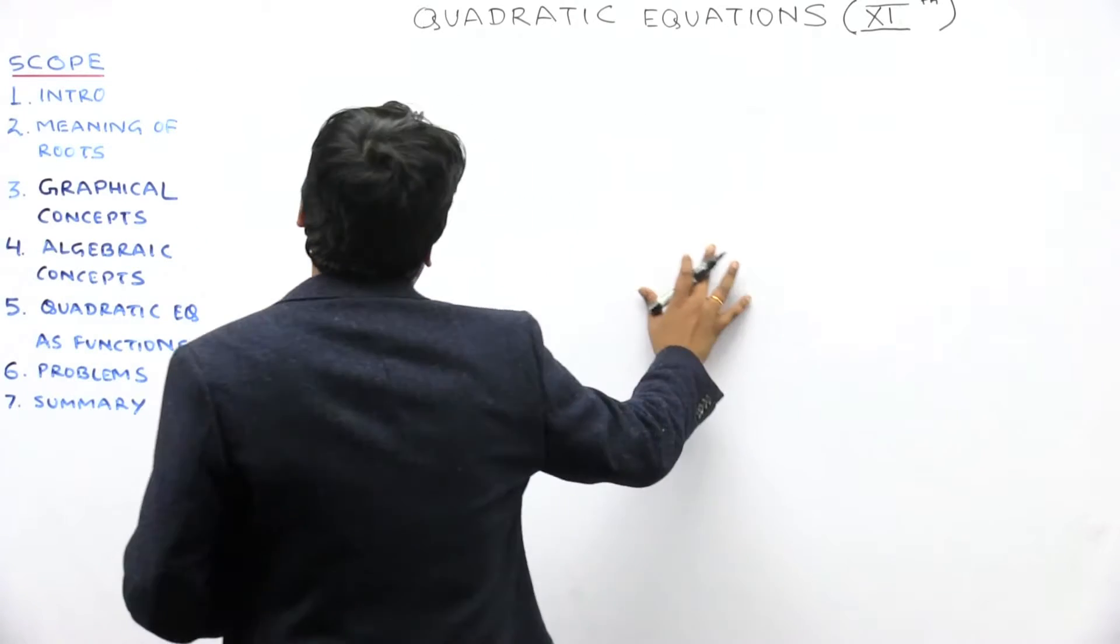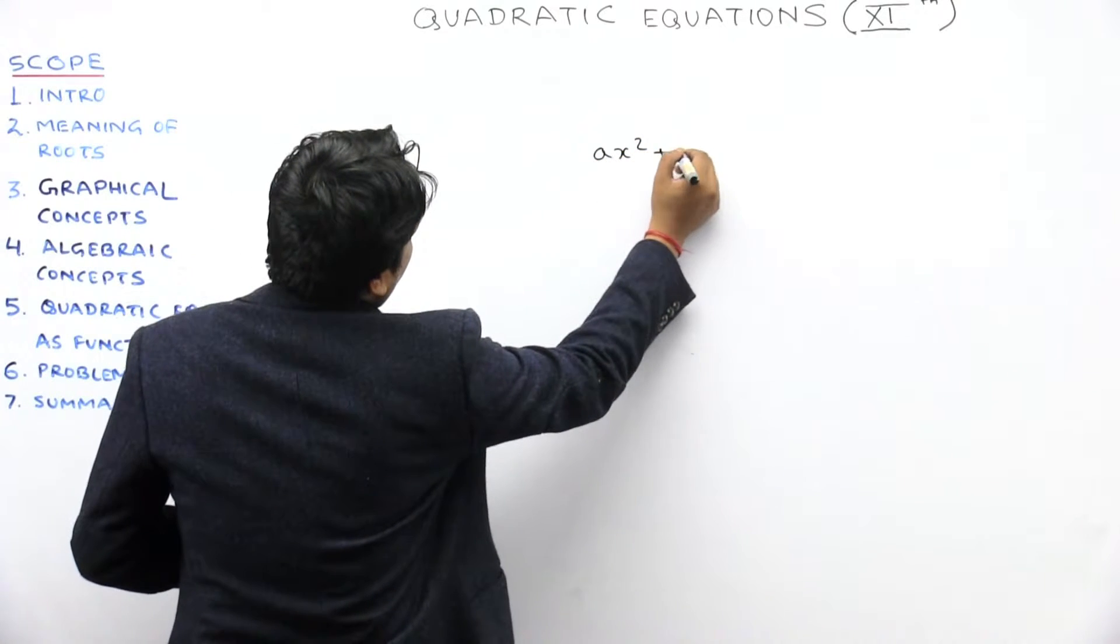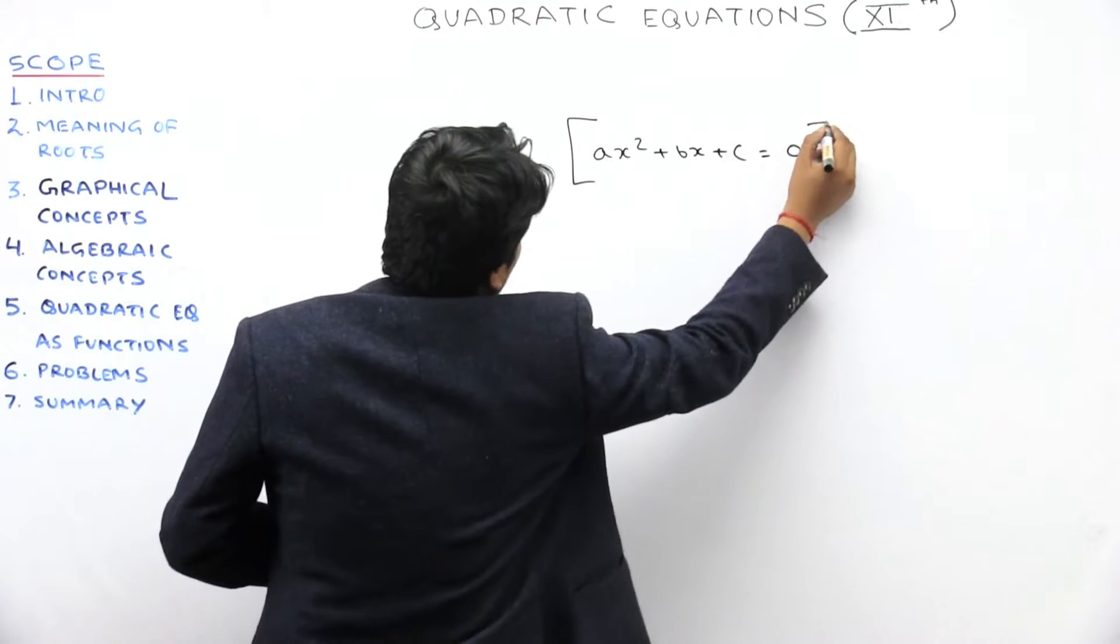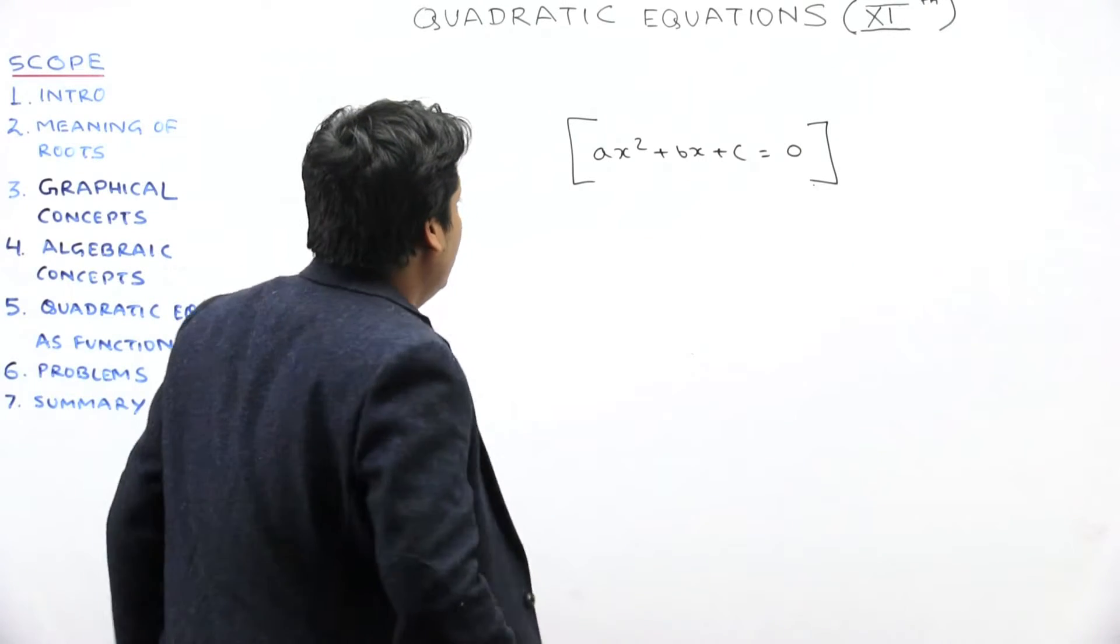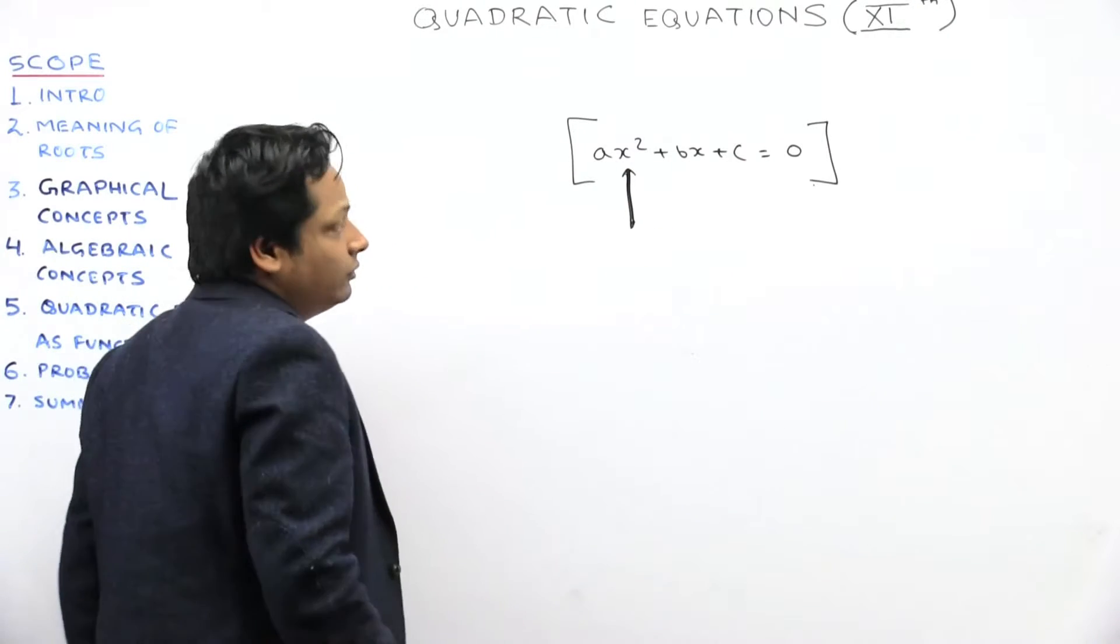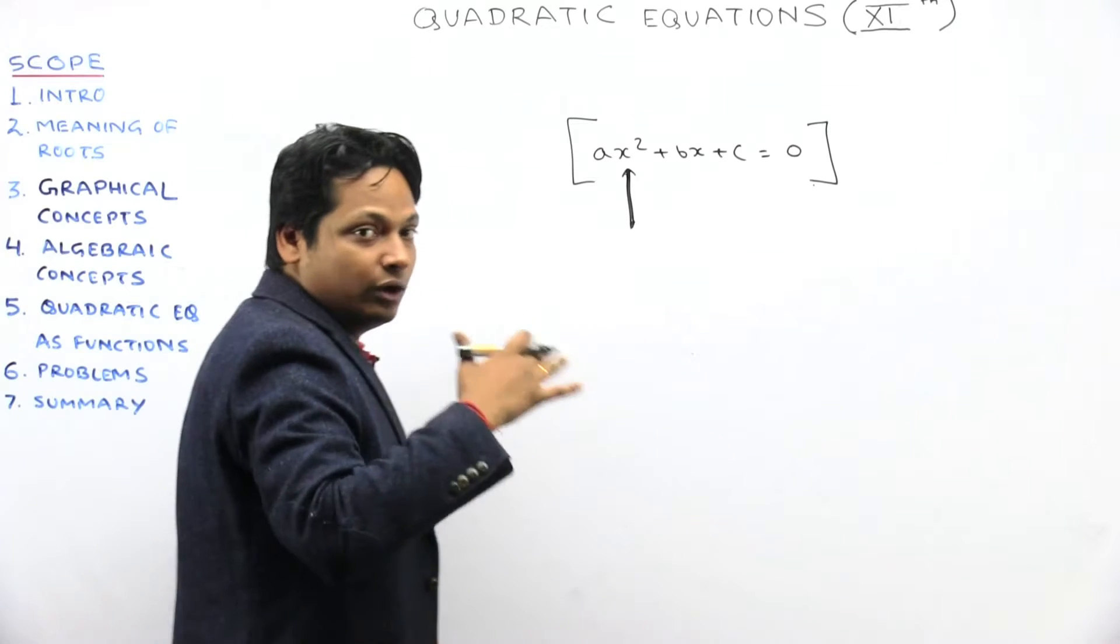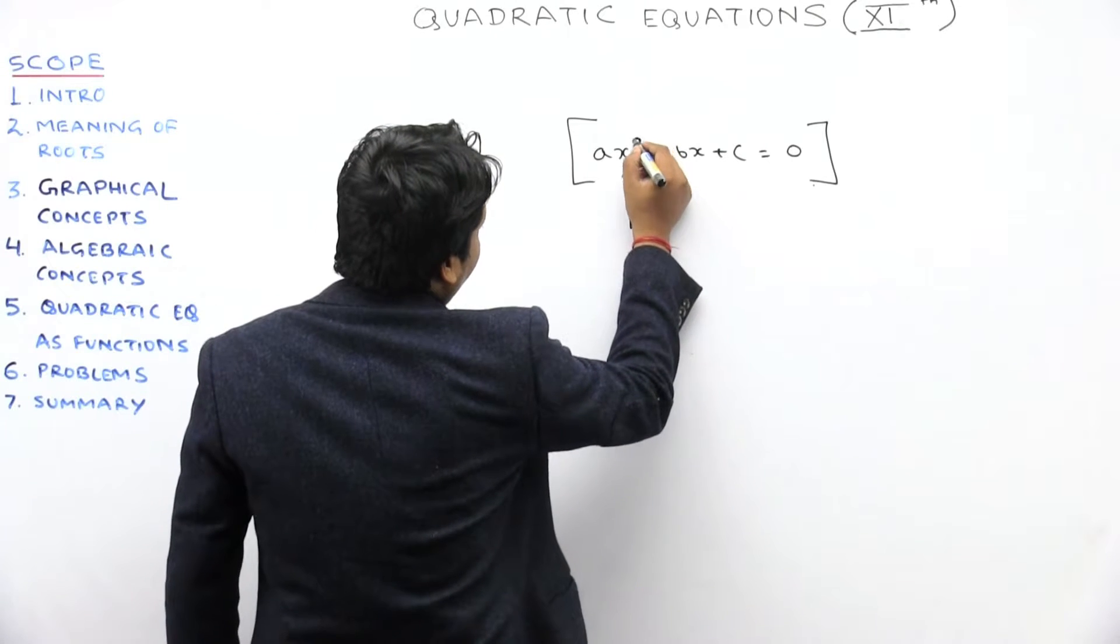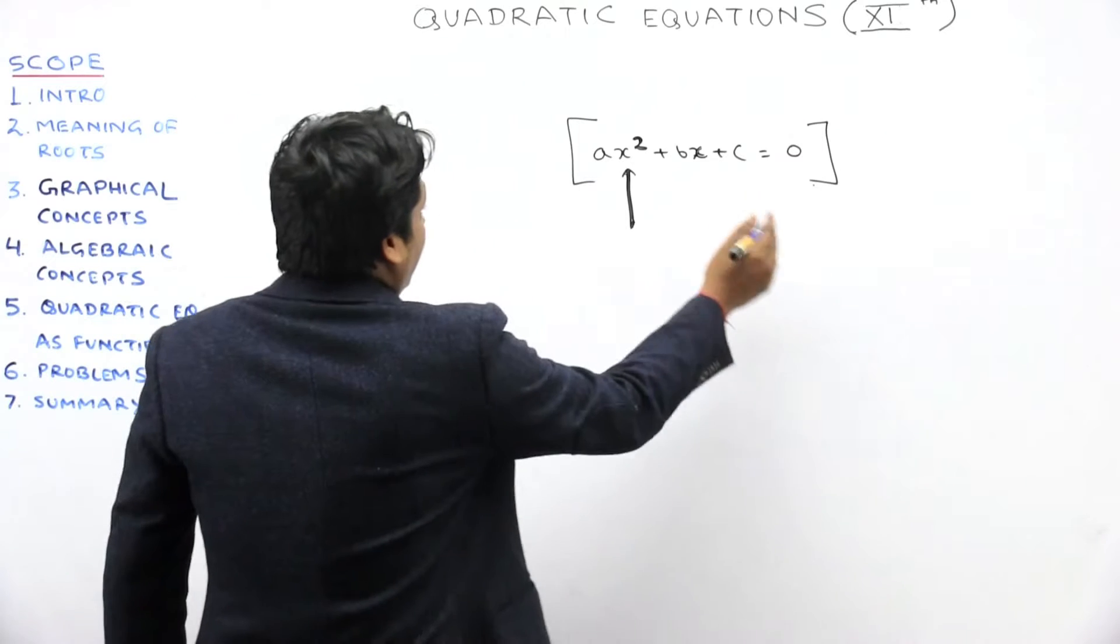A simple form which we have seen on the pre-board level is the quadratic equation. Any quadratic equation we can represent in this form: ax² + bx + c = 0. It's called quadratic because here the highest power is 2. When you have a polynomial, you can write it in descending order, and if the highest power is 2, then we call it a quadratic equation in this form.